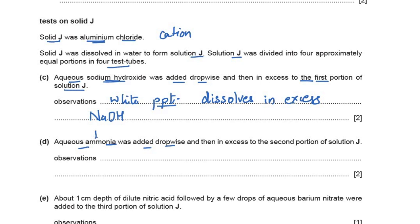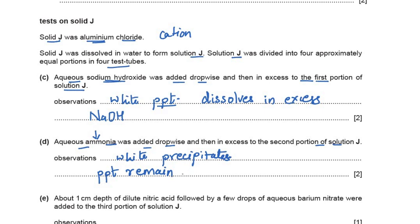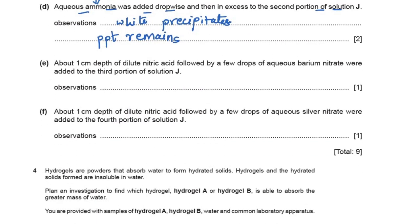Aqueous ammonia was added dropwise then in excess to the second portion of solution J. With ammonia, aluminium also produces white precipitates. However, the solubility behavior with excess changes: on adding excess ammonia the precipitate remains — it does not dissolve. Write: white precipitate forms; precipitate does not dissolve in excess ammonia.